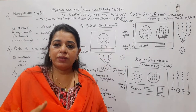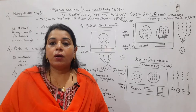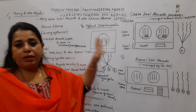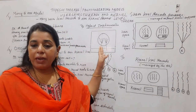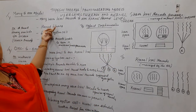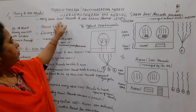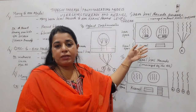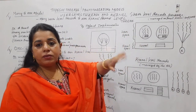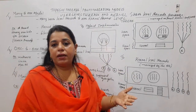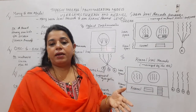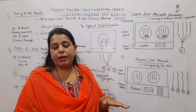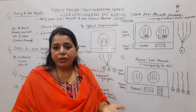User-level threads — the name is given because they are created by the user. The user creates these threads with the help of a thread library that is available. So the complete management of threads is done using the thread library. User-level threads are created in the user space, and kernel-level threads are created in the space meant for the kernel. The kernel is the heart of the operating system — the main module — without which no program will work.